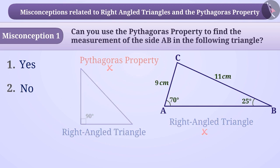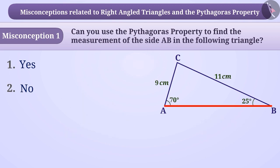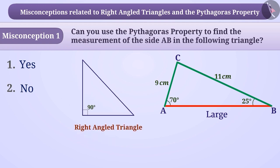They think that here, one side is greater than the remaining two sides, or sometimes it is not given in the question. But just by guessing, they consider that the triangle is a right-angled triangle. They think that the Pythagoras property can be used in both these situations.